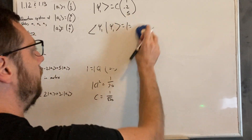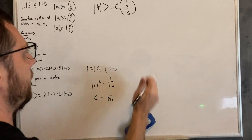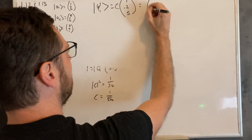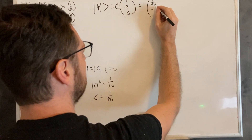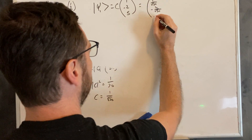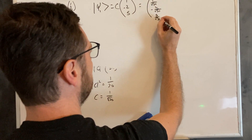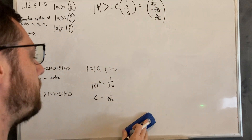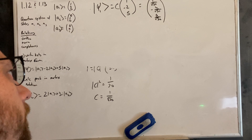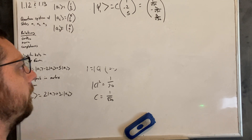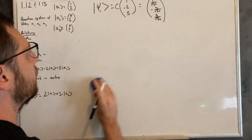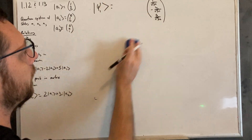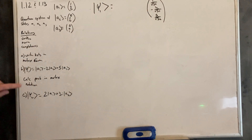So the normalized state is going to be the column vector (1/√30, -2/√30, 5/√30). I'm not seeing anything obvious to simplify, so I'll leave it in that form. Now that it's normalized, we can get the probabilities for the different states.